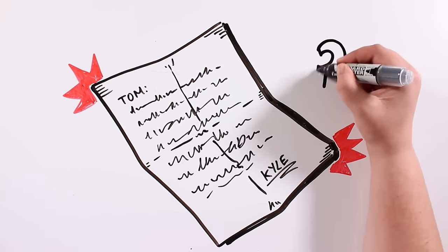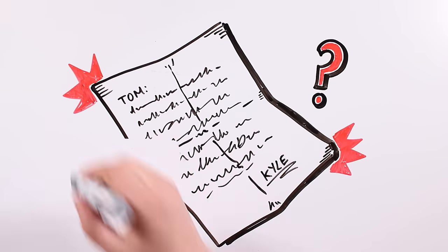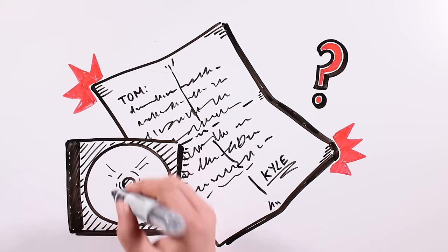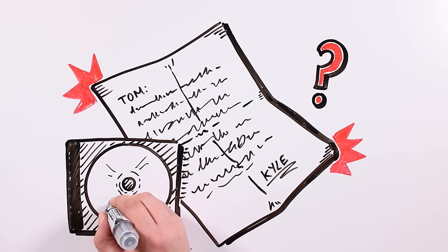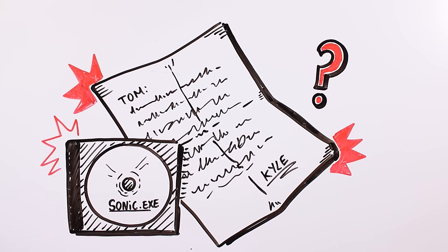After reading the note, I didn't understand anything. Was Kyle playing with me? I looked at the box and the CD inside it. There was nothing weird. It just had written on it with a black marker the words Sonic.exe. How could this hurt me?